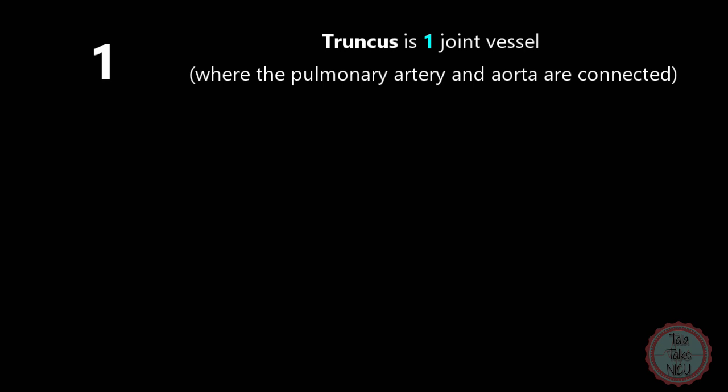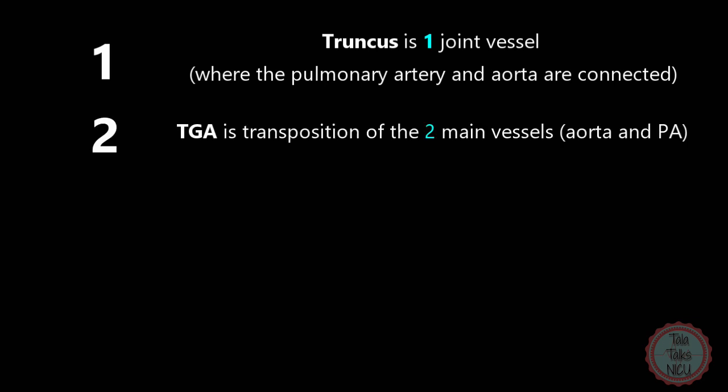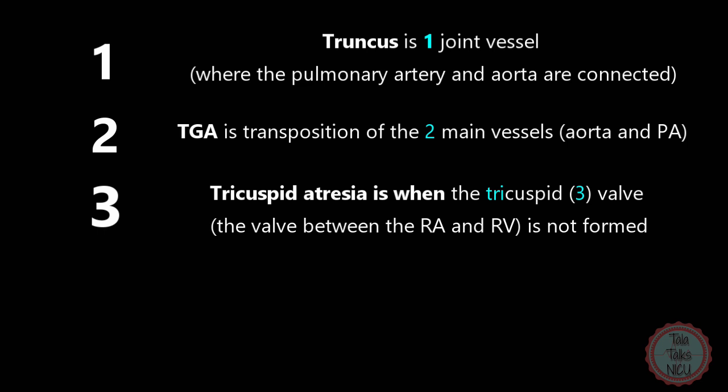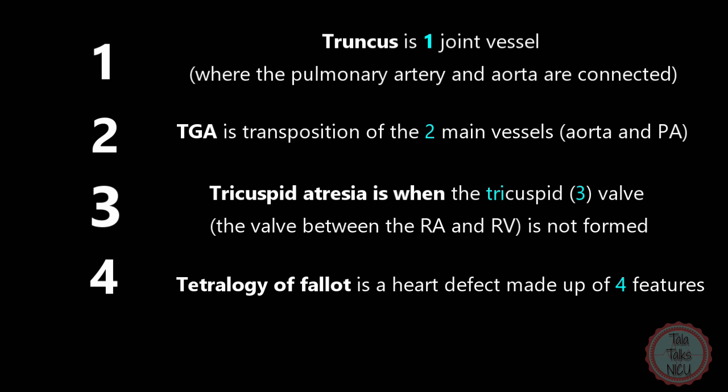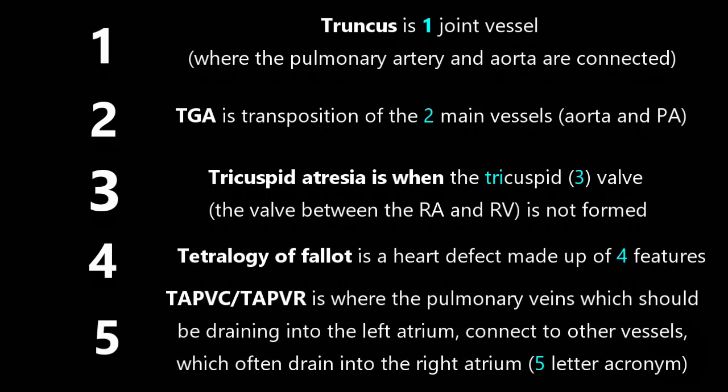So those are the five T's. Someone came up with a very easy way to remember all of these, connected to the numbers one through five. Truncus is one, because there's only one vessel — the aorta and pulmonary artery are combined coming out of the ventricle. TGA is two, because those two vessels are switched. Tricuspid atresia is three, because the valve is supposed to have three leaflets. Tetralogy of Fallot is four, because tetralogy means four — and it has four features we'll talk about later. And five is TAPVR — probably the weakest connection — because it has five letters.